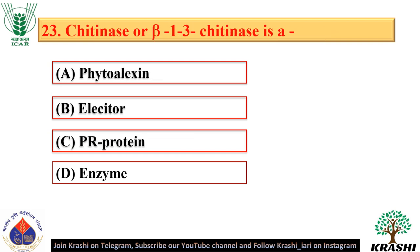Question number 23. Chitinase or beta-1,3-glucanase is a PR protein — that is, pathogenesis-related protein.